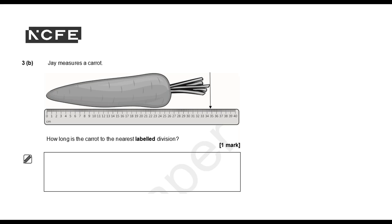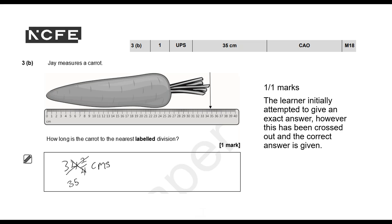3B: Jay measures a carrot. How long is the carrot to the nearest labelled division? You can pause to decide how many marks to award. And they've got one out of a possible one mark. They initially attempted to give an exact answer, however it's been crossed out and the correct answer—the nearest label division is 35—and that's what they've put. So we can give them the mark there.